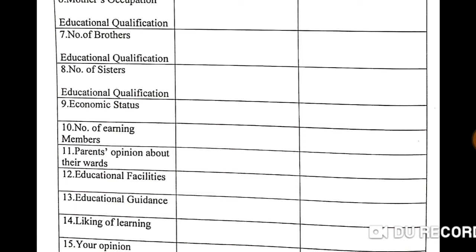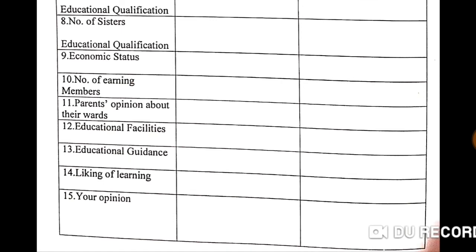Next, the number of earning members. We also have to write the parents' opinion about their ward — it is very important whether they have a positive or negative attitude towards giving education to the student. On the twelfth row, write the educational facilities the student is enjoying. On the thirteenth, write whether the student is getting proper educational guidance from home or not, as proper guidance helps the student stay on the right track of education.